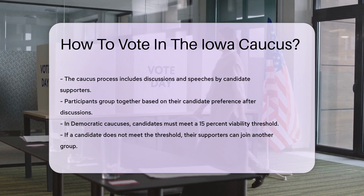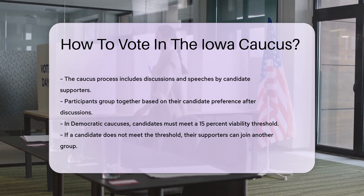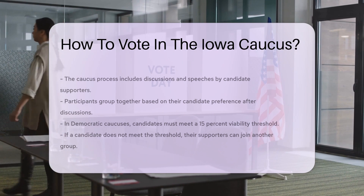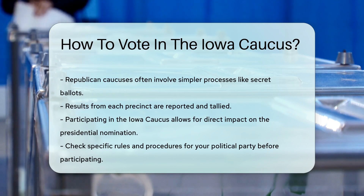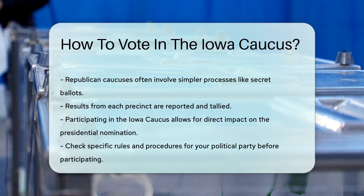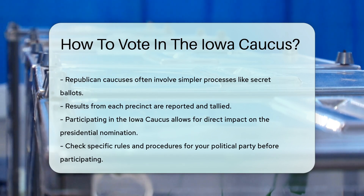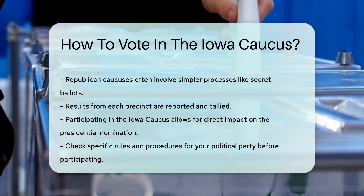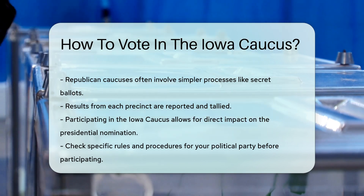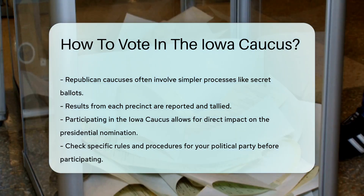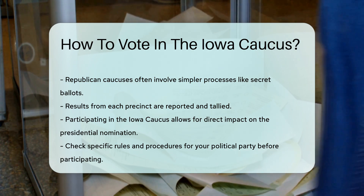Republican caucuses are simpler, often involving secret ballots. The results from each precinct are then reported and tallied. Participating in the Iowa Caucus is a great way to engage in the democratic process. It allows you to have a direct impact on the presidential nomination. Make sure to check the specific rules and procedures for your party.